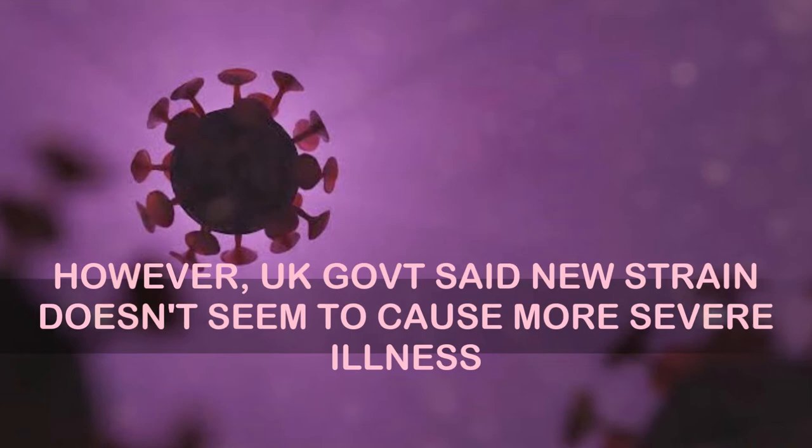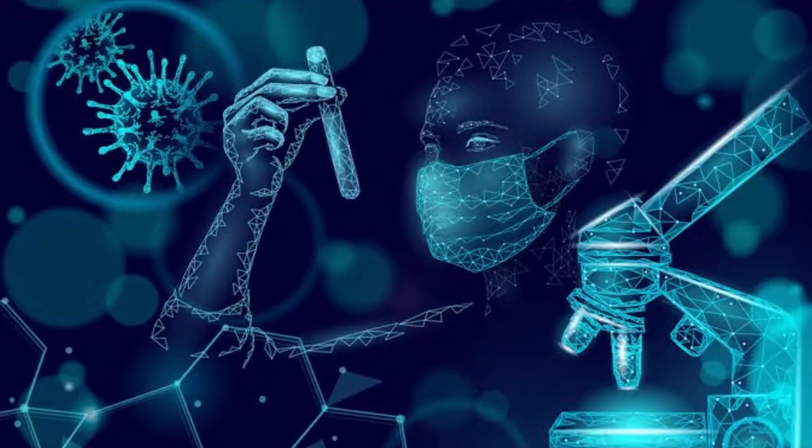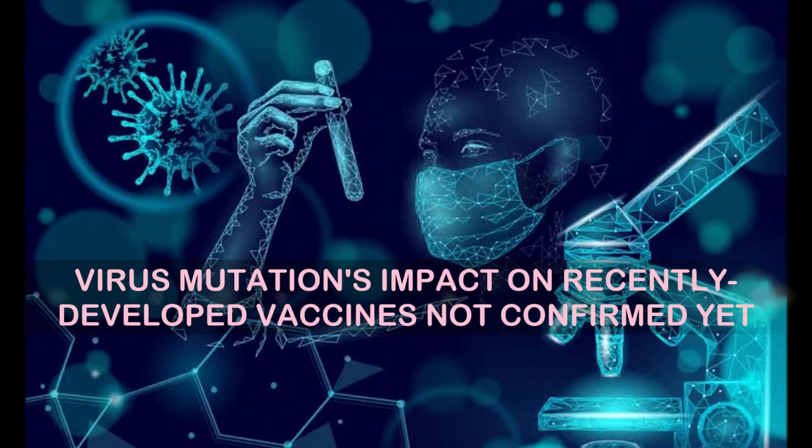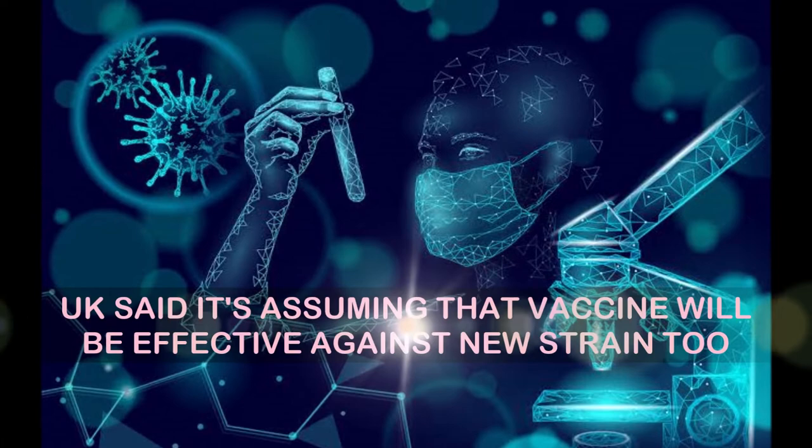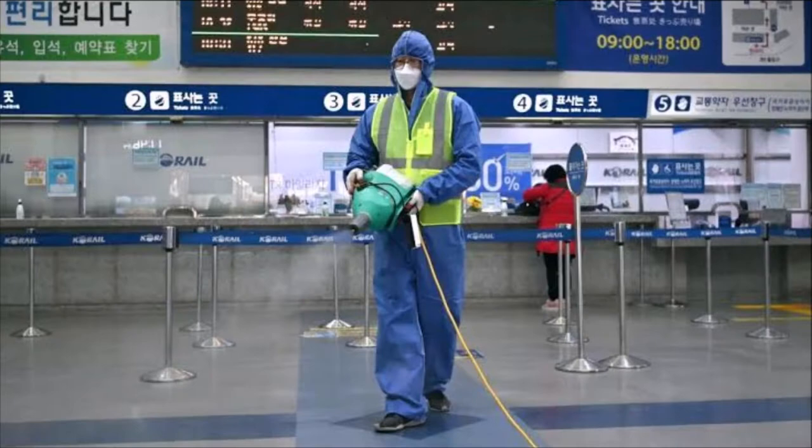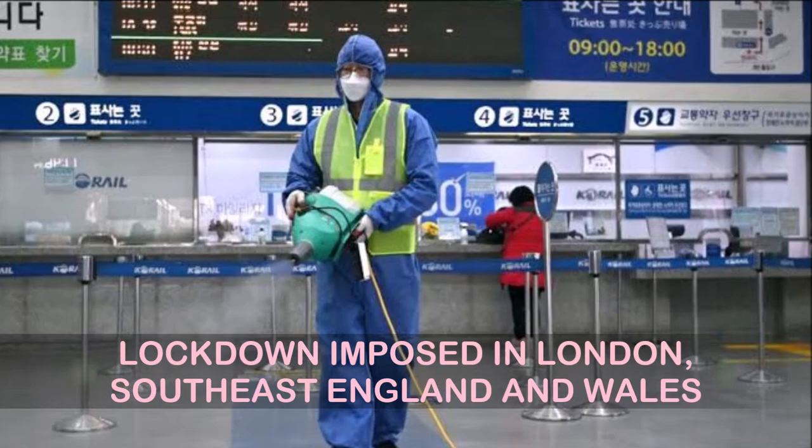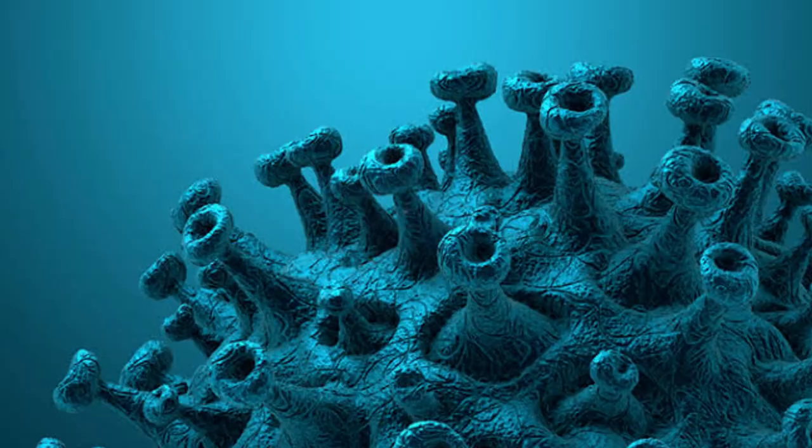However, UK government said that the new strain doesn't seem to cause a more severe illness. The virus mutation's impact on the recently developed vaccines is not confirmed yet. The UK government said that it is assuming that the vaccine will be effective against the new strain too. Meanwhile, a lockdown was imposed in London, South East England and Wales.